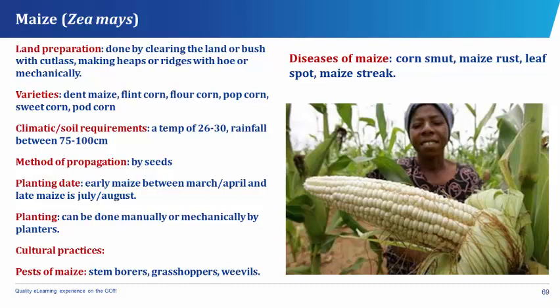Early maize should be planted between March to April and late maize is planted around July to August. Planting can be done manually or mechanically by planters. Maize has different cultural practices which include the supplying, the thinning, the fertilizer application, the weeding, and the control of pests and diseases.